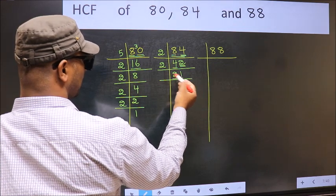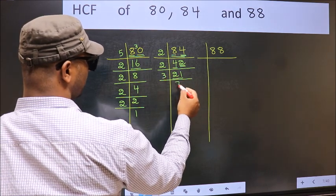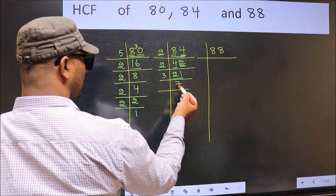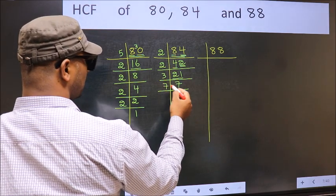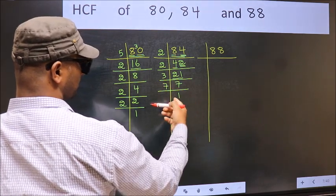Now here we have 21. 21 is 3 sevens, 21. Now 7 — 7 is a prime number, so 7 ones, 7.